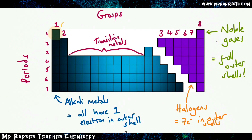In some periodic tables you'll also see hydrogen placed in group one. On the one in your GCSE you'll see it's been moved separate. The reason for that is that hydrogen, though it has one electron in the outer shell, is not a metal. All of the ones in group one are alkali metals — hydrogen is not a metal, therefore we separate it and say it's not part of group one.